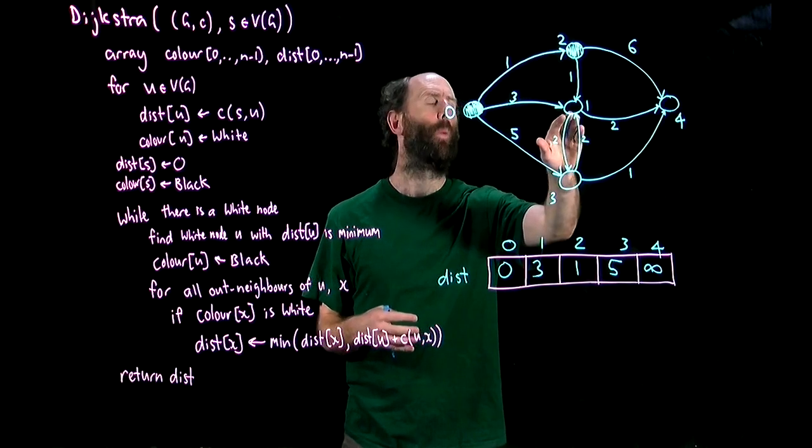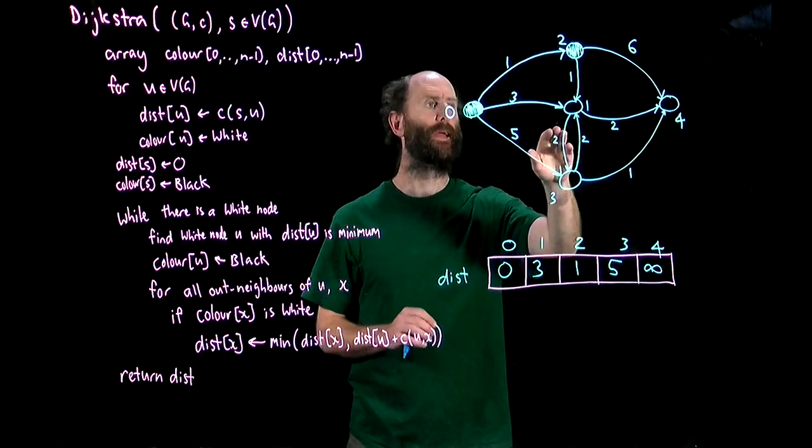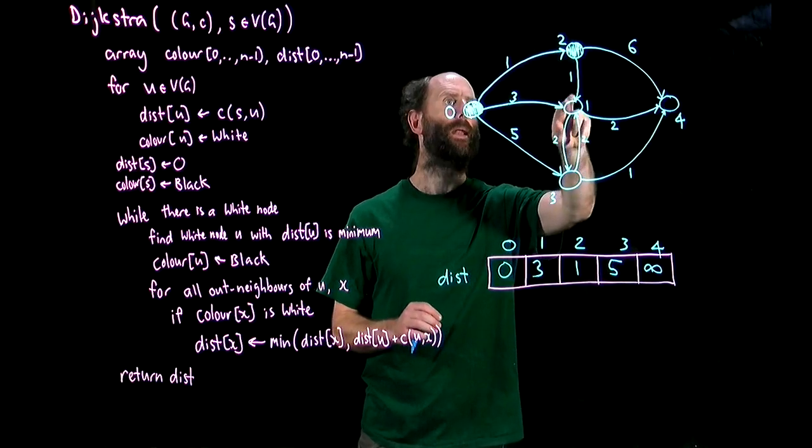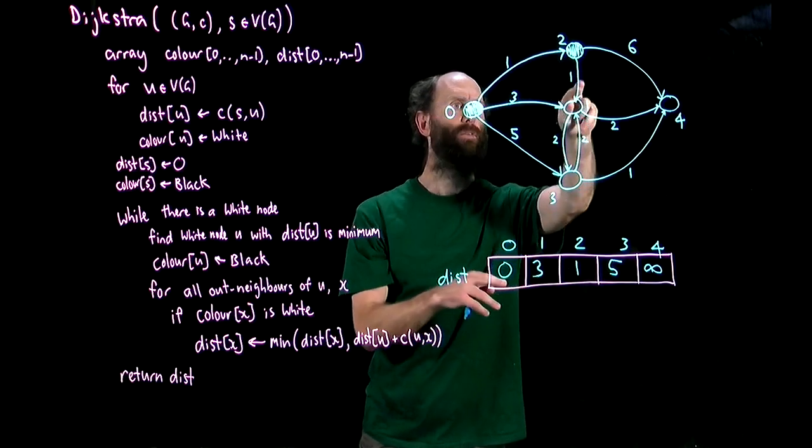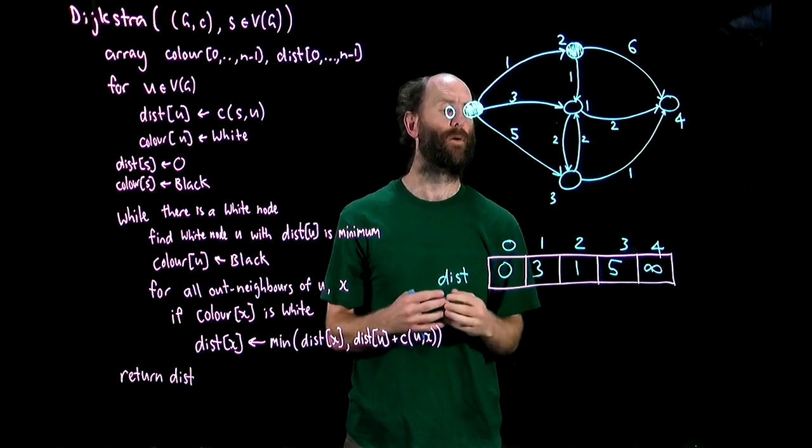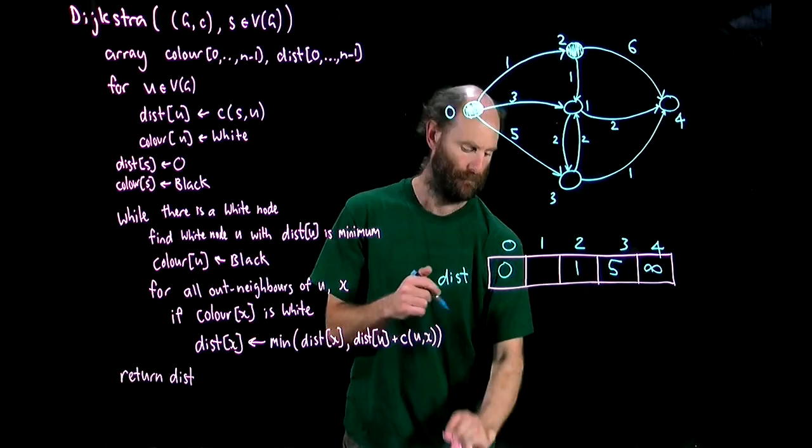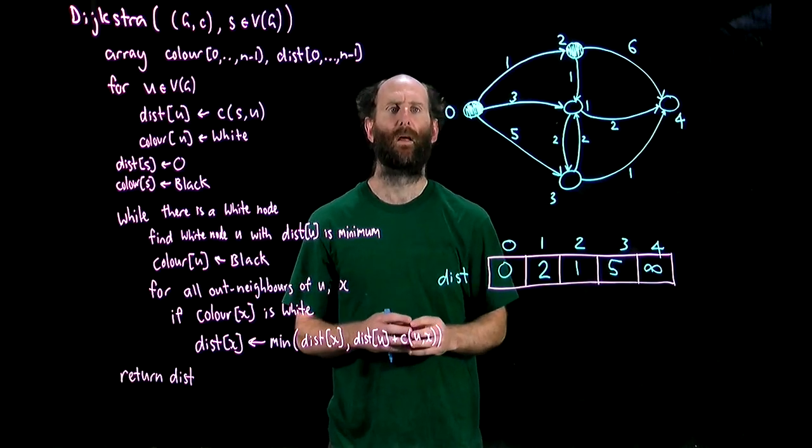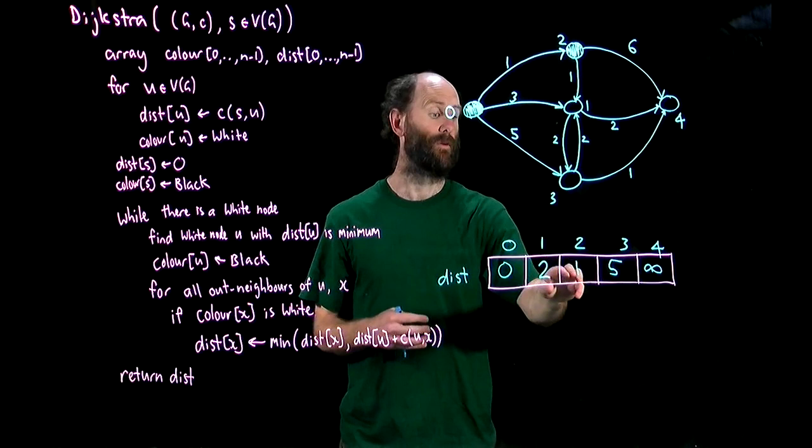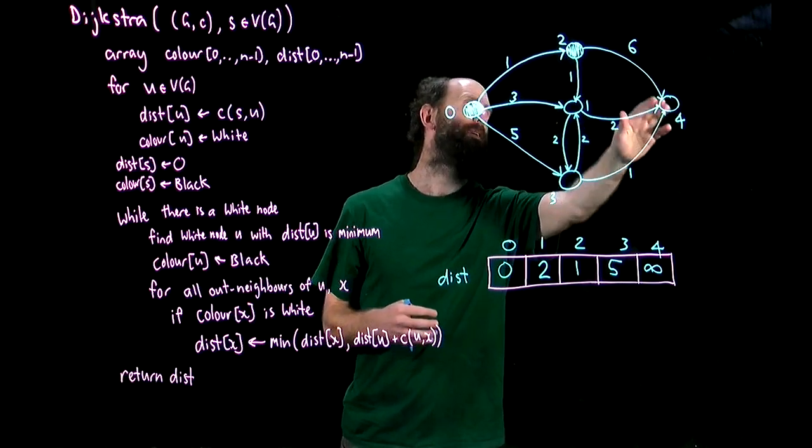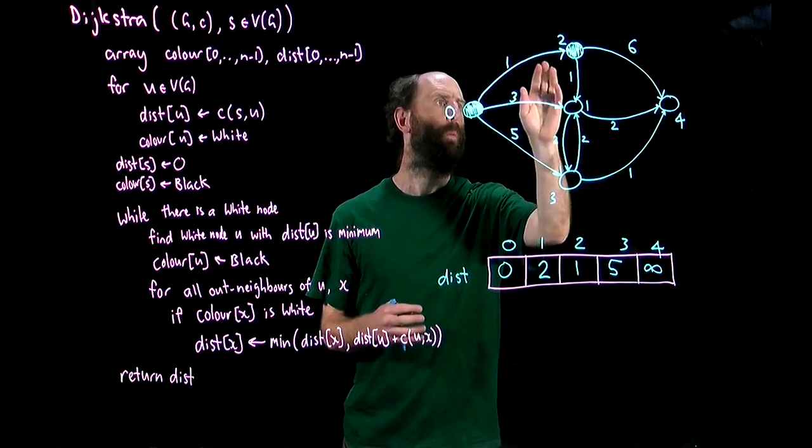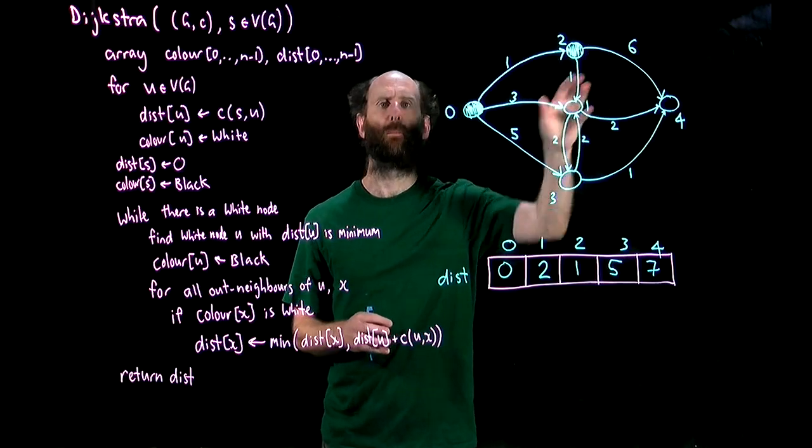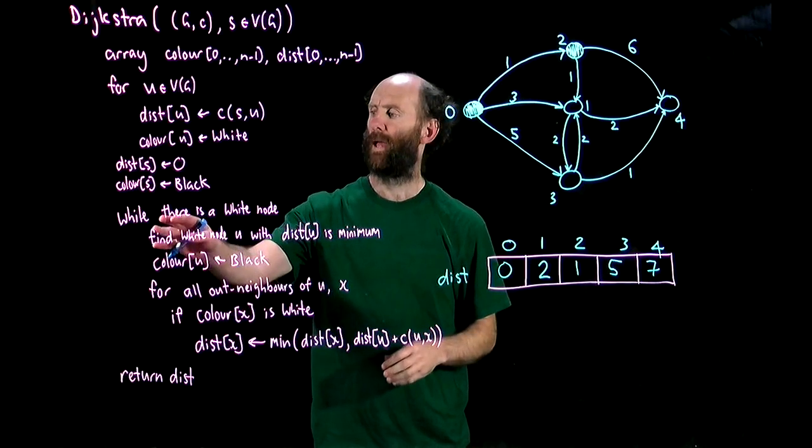Looking at out neighbor one the current distance to one is three but the path through two and on to one has distance one plus the cost of this arc which is one. One and one is two which is less than three so we'll update this entry. The only other out neighbor is four which currently has infinite distance so we update that to be the distance to two which is one plus the weight of this arc which is six. One plus six is seven so we update this entry. There's no more out neighbors of two so we're back here at the top of the while loop.